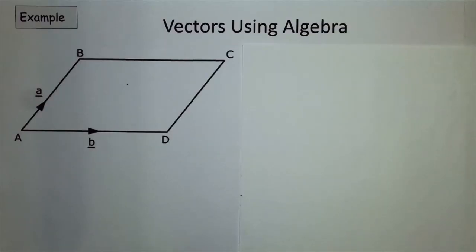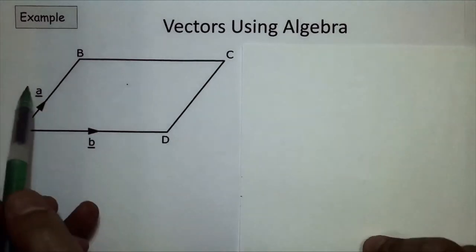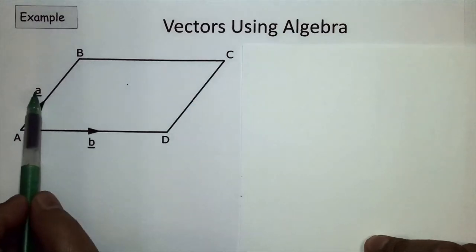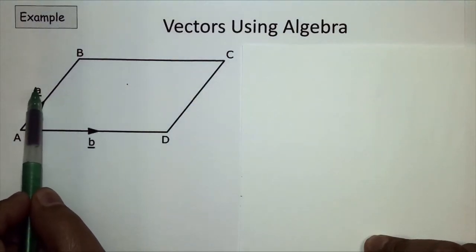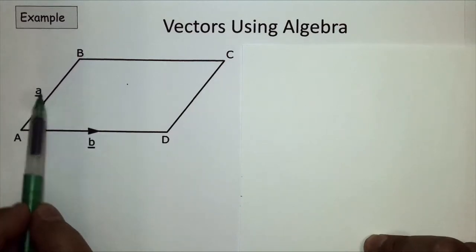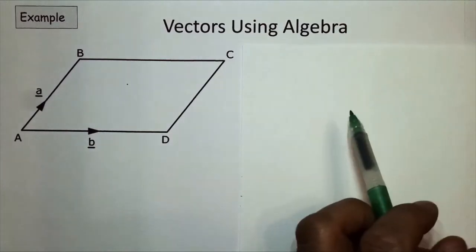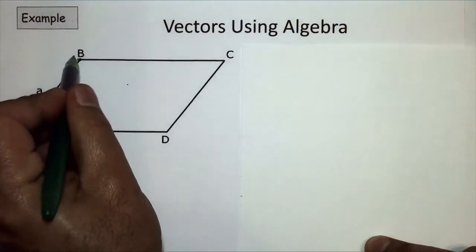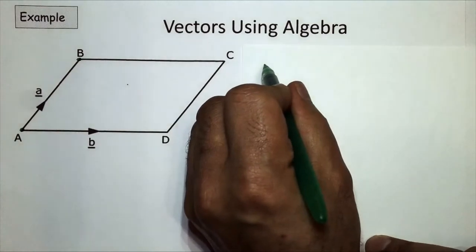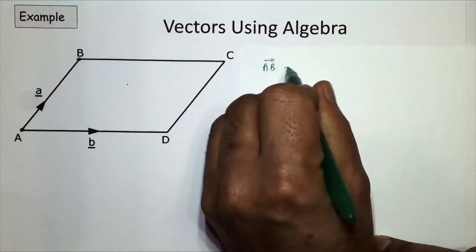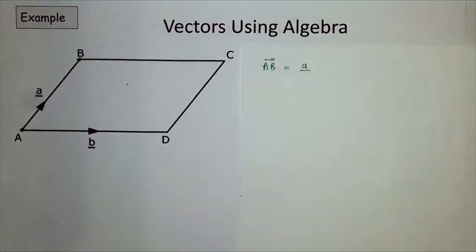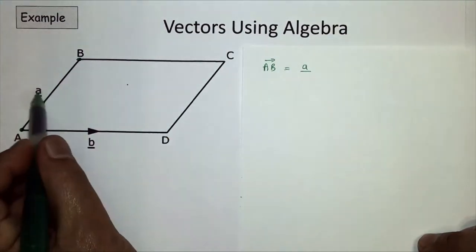Using algebra to describe vectors, I'm going to use this diagram to go through some of the key points. We've got vector a here between A and B, and vector b. When using algebra, we're not going to be writing the column vectors - the numbers for X and Y each time. We can refer to the vectors themselves to make working out easier. Each corner is given a capital letter, so to go from A to B, we write AB with an arrow equal to vector a - the lowercase a underlined. Sometimes you'll see the lowercase in bold as well.